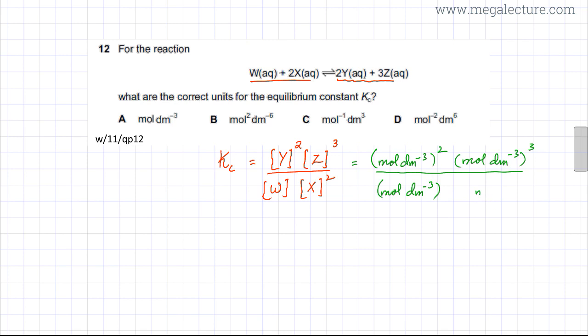A simpler way to simplify this is to think of mol dm⁻³ as x. So it's basically x² times x³ divided by x times x². That's x⁵ divided by x³, and the answer is x².